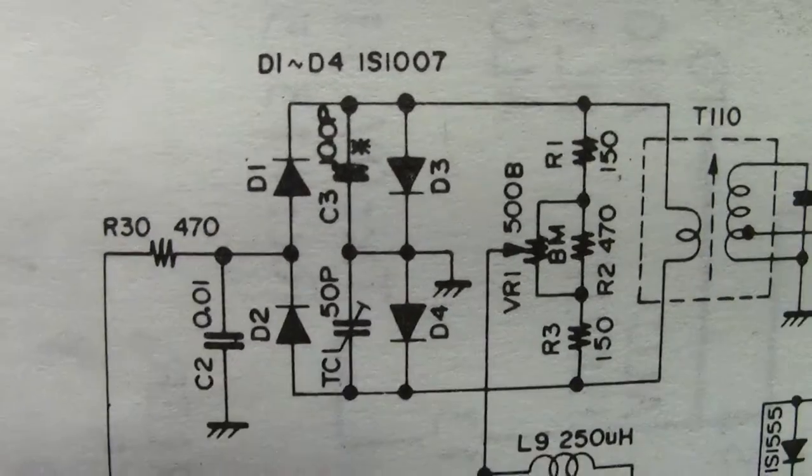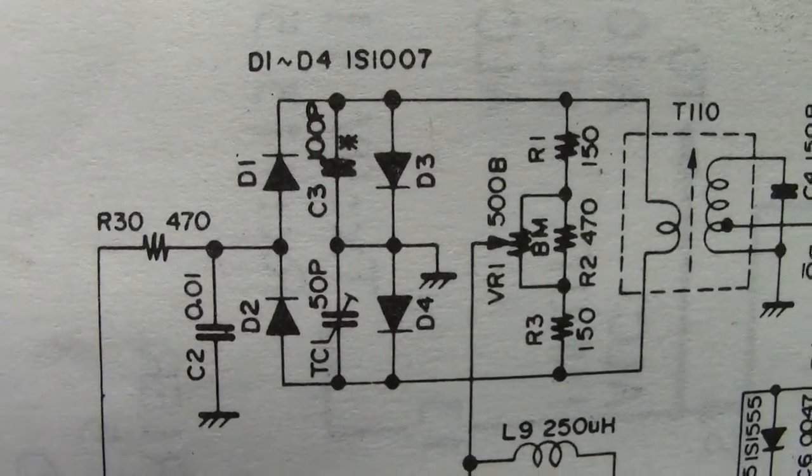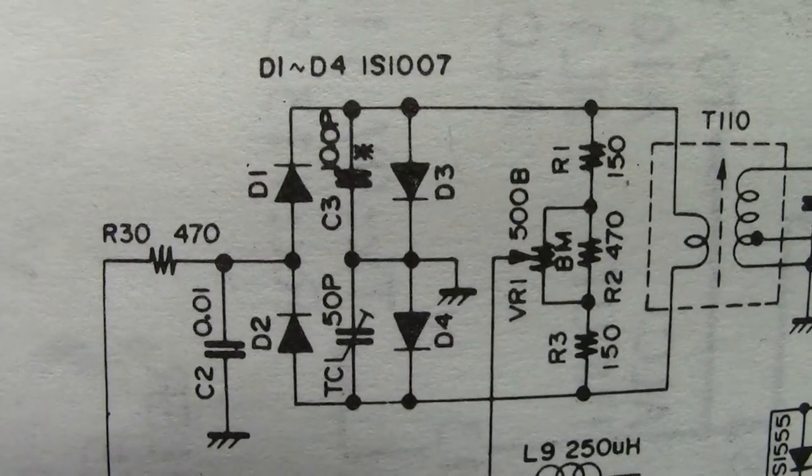The diodes are cheap. They are 1N4148 I believe signal diodes. Replace all four of them at the same time. Don't mess around.